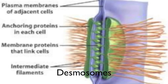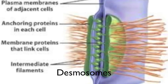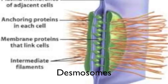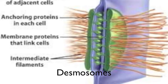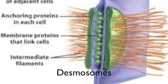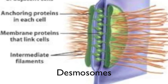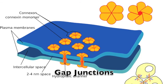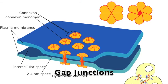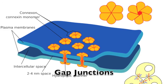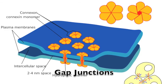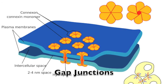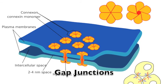Desmosomes are only found in animal cells and are known as the anchors. Desmosomes fasten cells together into small sheets. Gap junctions are also only found in animal cells and are known as the communicators. They provide a cytoplasmic channel between adjacent cells to aid in communication.